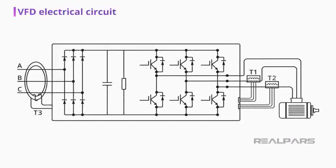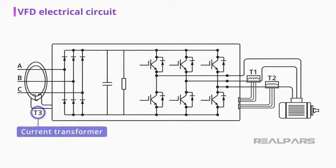Let's look at this VFD diagram. The first thing we find, T3, is a Current Transformer, which has the function of measuring the current entering our VFD.